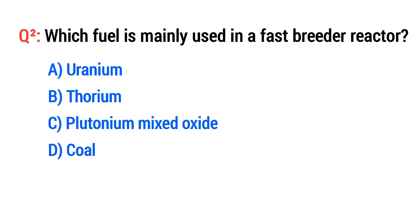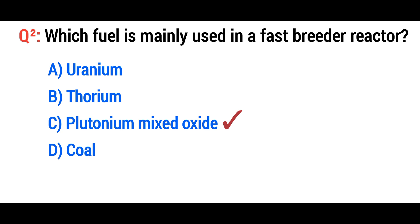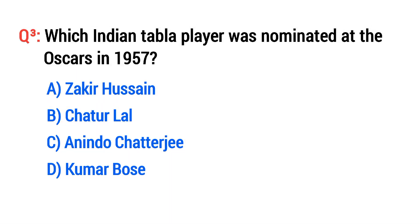Question number two: Which fuel is mainly used in a fast breeder reactor? The right option is C: Plutonium mixed oxide. Question number three: Which Indian tabla player was nominated at the Oscars in 1957?